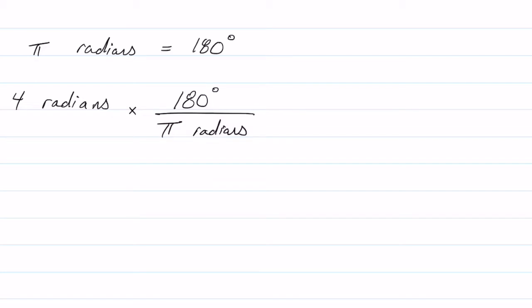So I'm going to go 4 radians times 180° over π radians. Radians cancel, and so I'm left with 4 times 180° over π. Well, degrees is my only unit, so I know I'm doing this right.